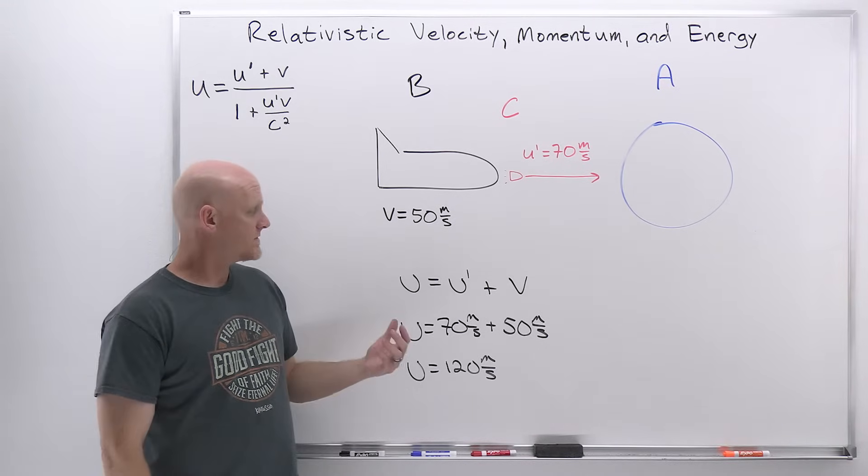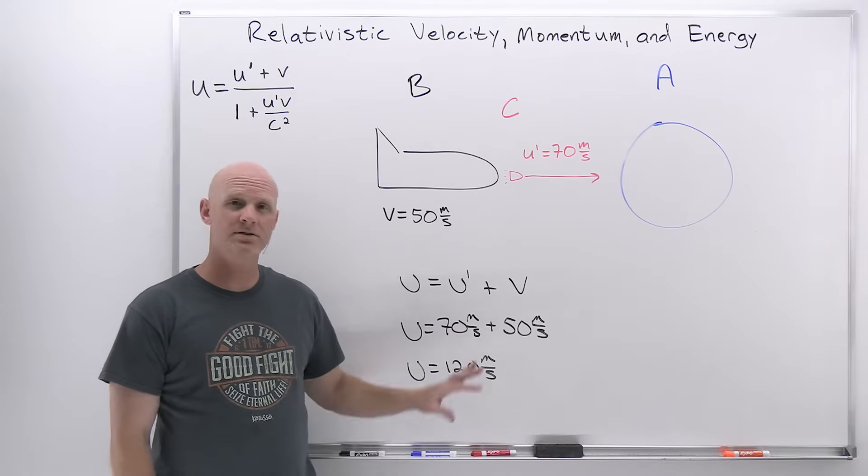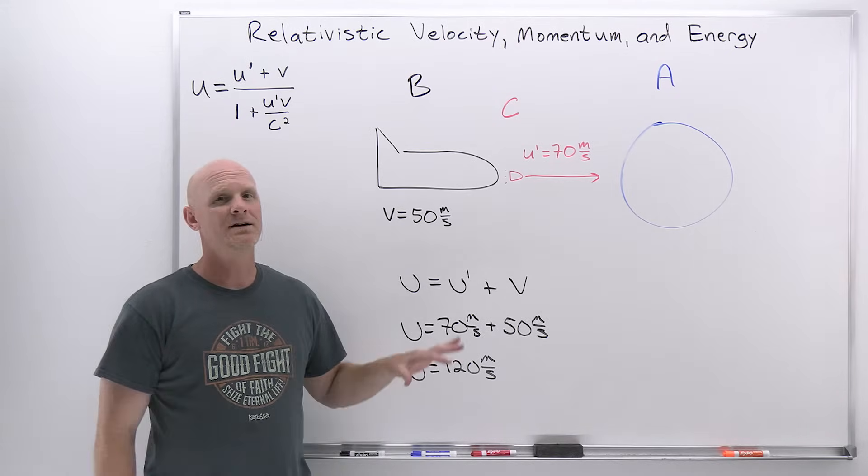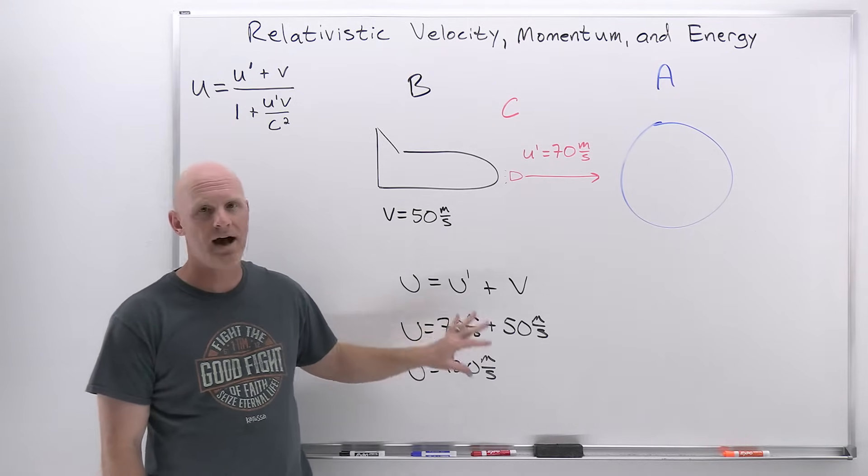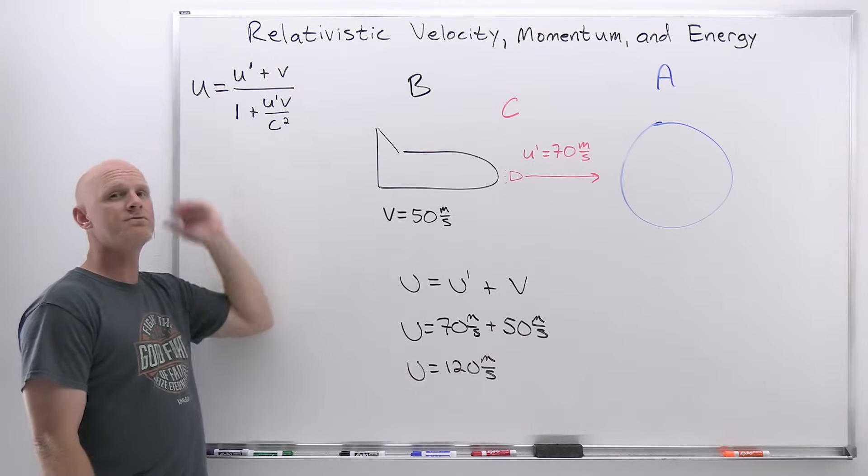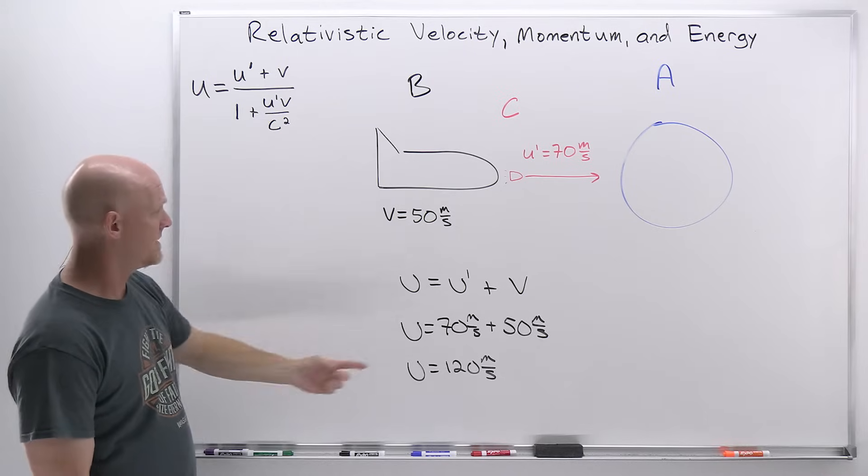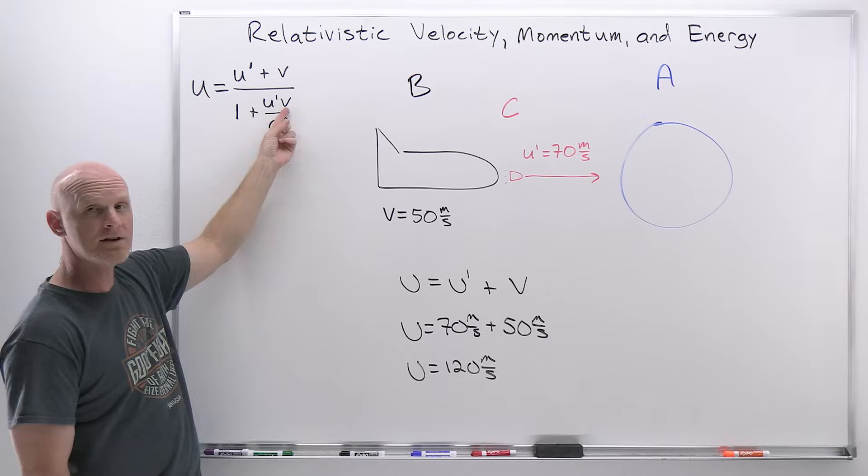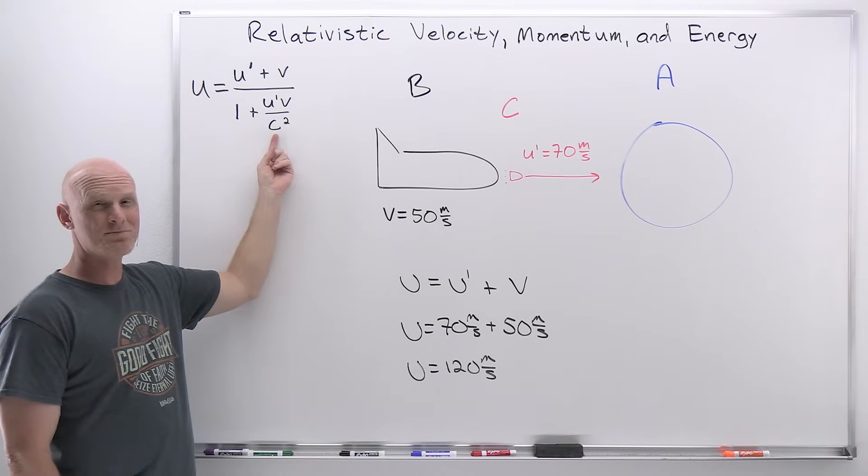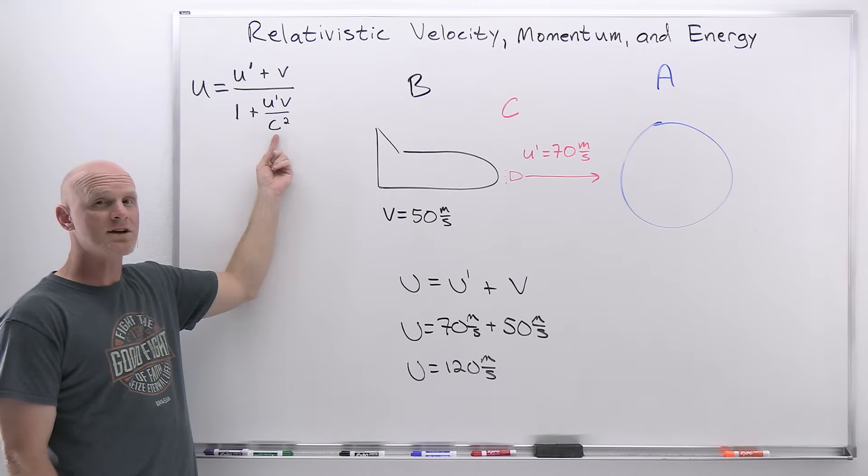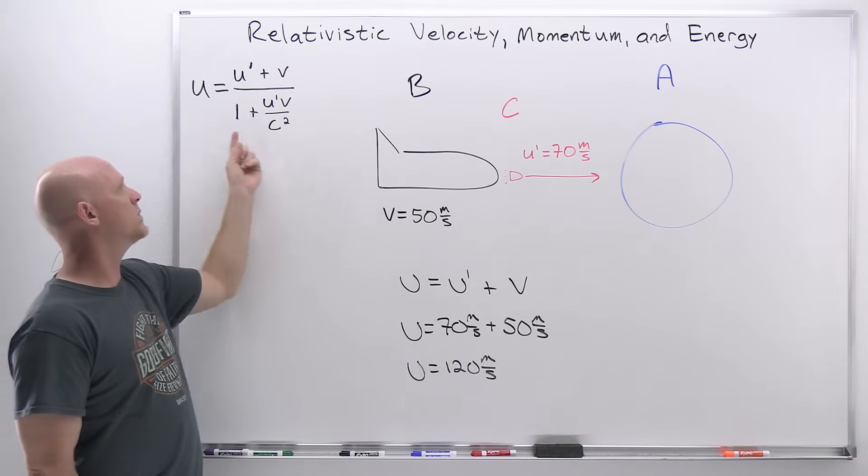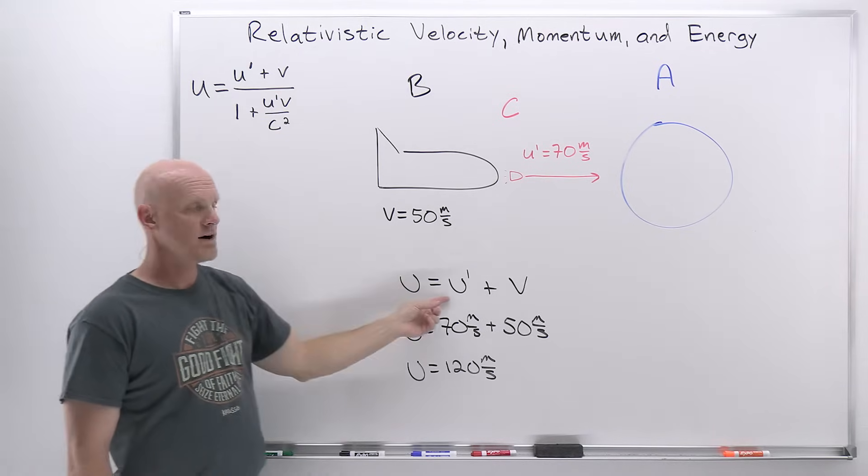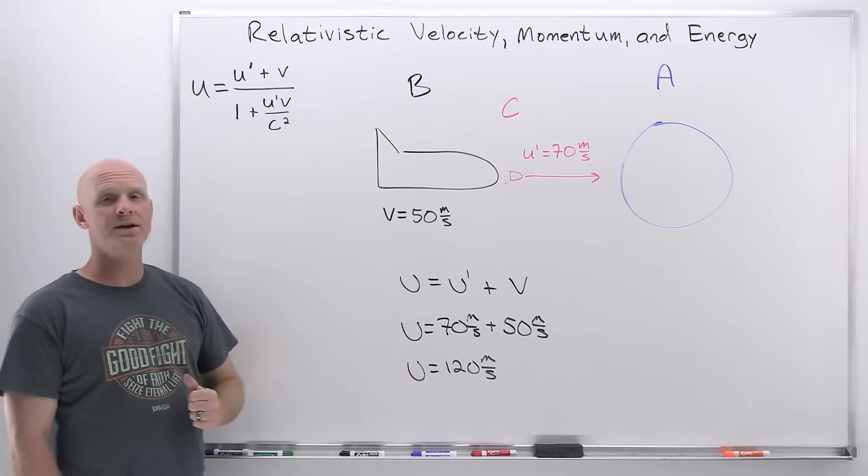Now as long as our velocities here are fairly small compared to the speed of light, this still works really well. But once the velocities start approaching some significant fraction of the speed of light, this becomes less and less accurate, and we've got to now use our new relativistic formula for relative velocity. But notice, for something like 70 meters per second and 50 meters per second, you plug these in and you'd have 70 times 50, which would be 3500, but 3500 divided by the speed of light squared is effectively zero. And one plus zero is still one, and that term goes away, and you're just left with the sum of those relative velocities. It's no big deal.